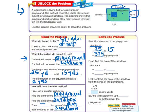Next, I'll find the area of the sandbox. And remember, since it's a square, the base and the height are the same. So I'll just do 6 times 6, which is 36.